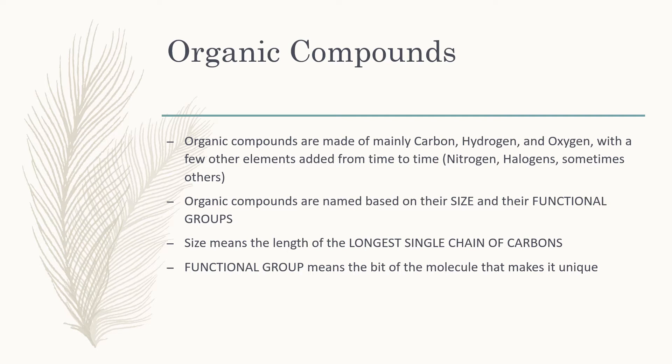Organic chemistry is the study of compounds that are mostly made of carbon, hydrogen, and oxygen, with sometimes other things - nitrogen pretty frequently, halogens sometimes, and sometimes other stuff. These are important to us as people because they are what we are made of.